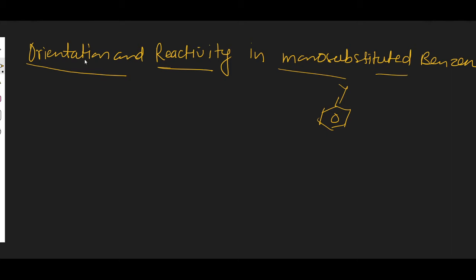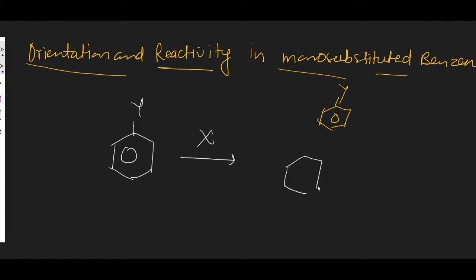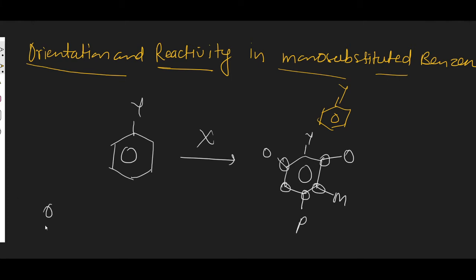Now let's understand what orientation means. Orientation means that when we have a mono-substituted benzene and we carry out its further substitution reaction, suppose with some X, the already existing Y-substituent has the capability to direct the incoming electrophile or nucleophile to either the ortho position, the meta position, or the para position. So basically, mono-substituted benzene has three sides: two are ortho, two are meta, and one is para. So in orientation, either an ortho product, para product, or meta product will be obtained.